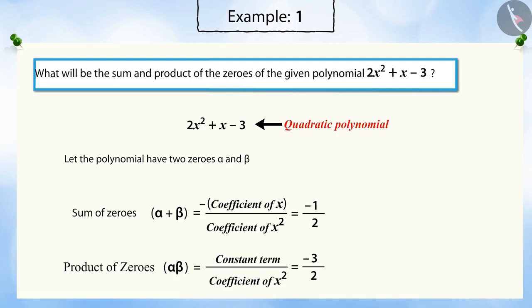So in this way, we can find the sum and product of zeros of the given polynomial. Let us see another example.